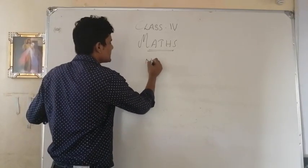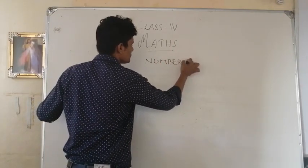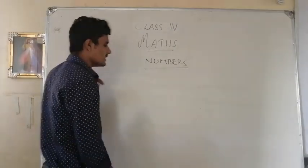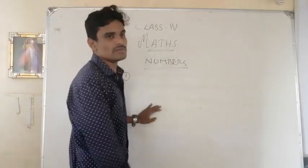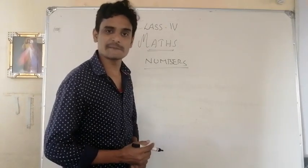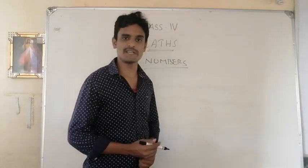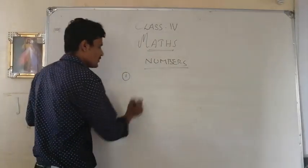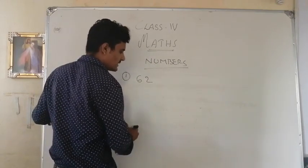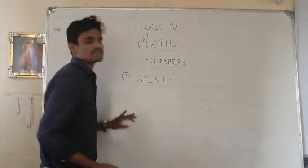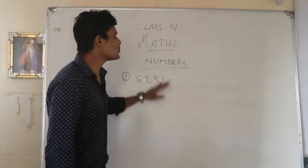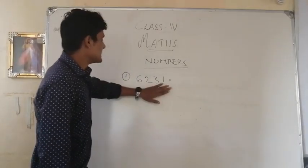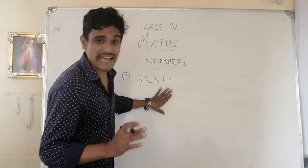Today our topic is Numbers. Our chapter is Numbers. Look at here. First, I want to read out how to convert numbers into expanded form. Last year we already learned about this topic; this year we will learn something more. The first number is 6211. Look at it. How to convert these numbers into expanded form. Expanded form means the place values of the numbers.